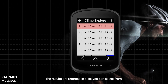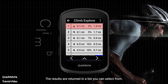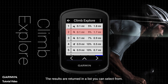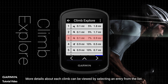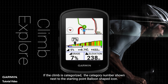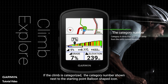The results are returned in a list you can select from. More details about each climb can be viewed by selecting an entry from the list. If the climb is categorized, the category number shows next to the starting point balloon-shaped icon.